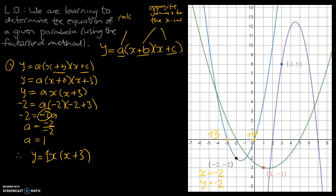What that means is there's no number in front of the brackets. Our final equation is y equals x times (x plus 3). We should have a 1 there, but mathematicians are lazy — we're going to make that invisible.